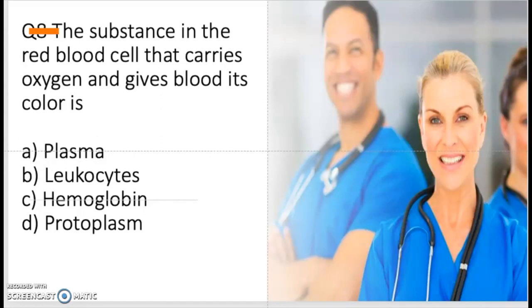Question number eight: the substance in the red blood cell that carries oxygen and gives blood its color is plasma, leukocytes, hemoglobin, or protoplasm. Take a moment and think about this because we talked about this one too.